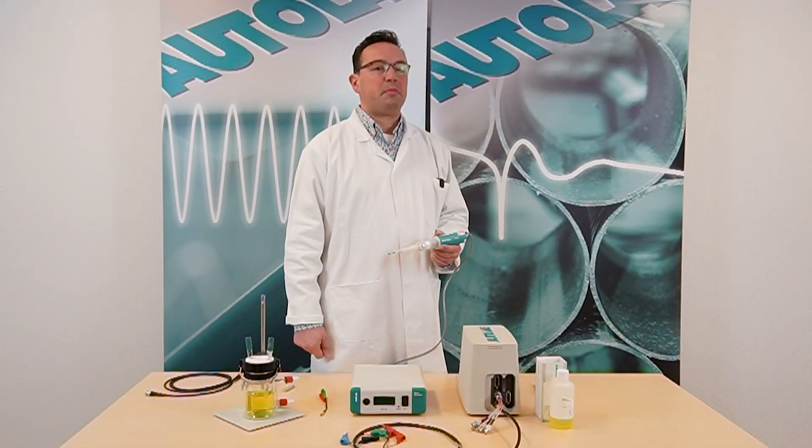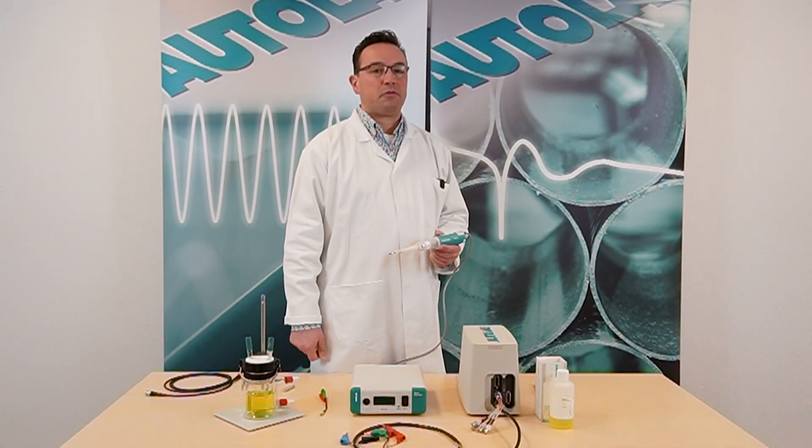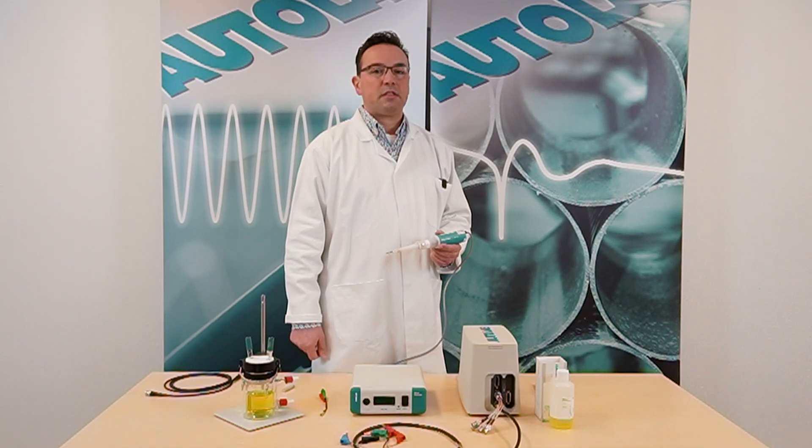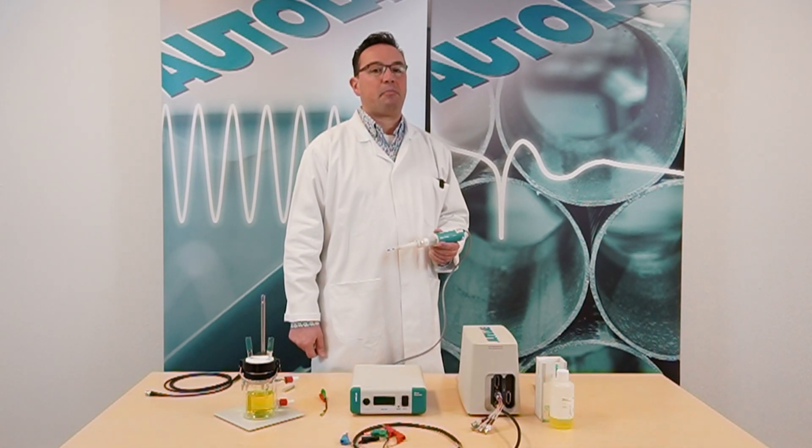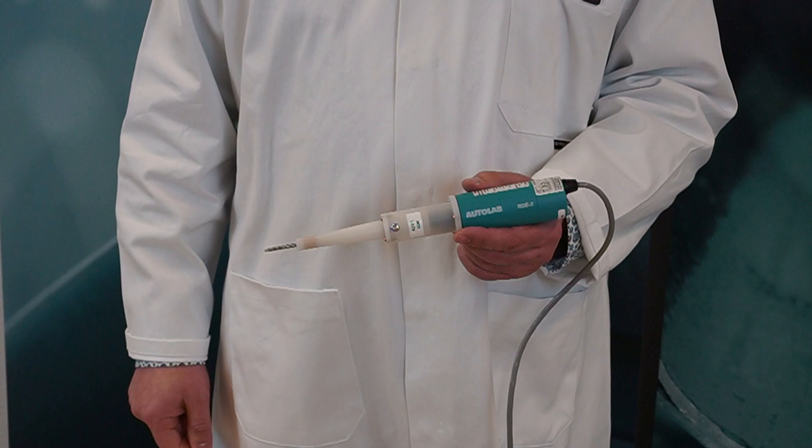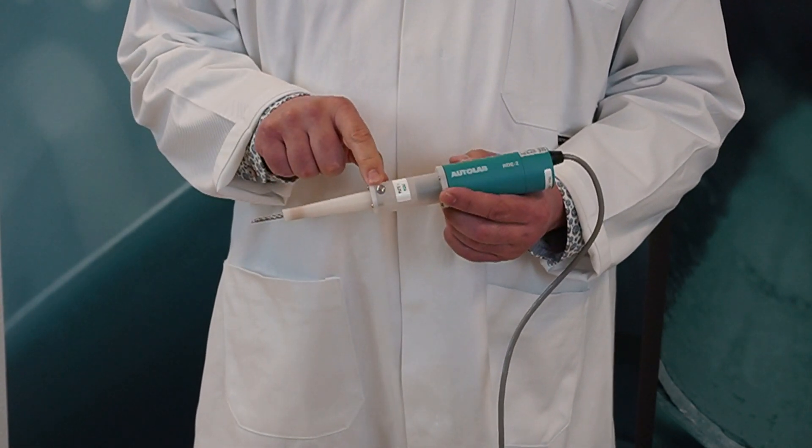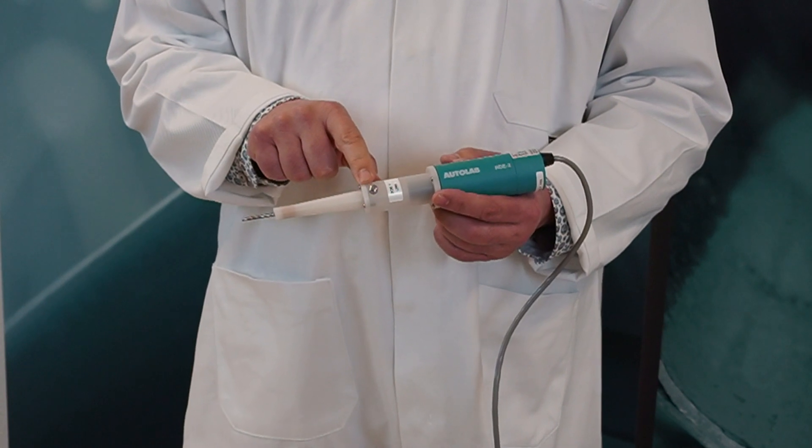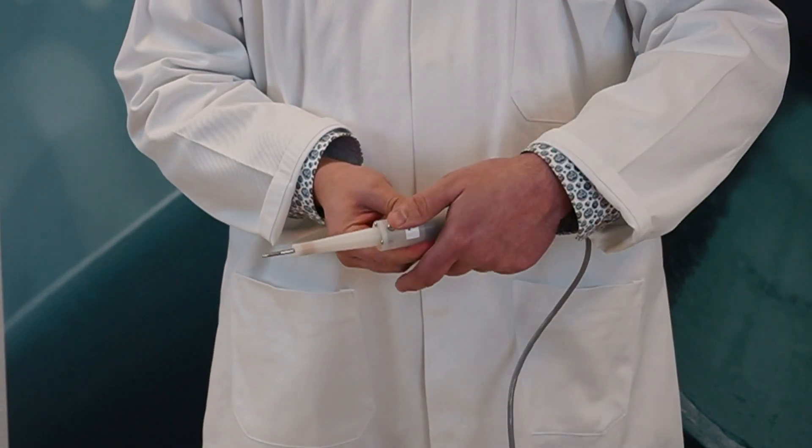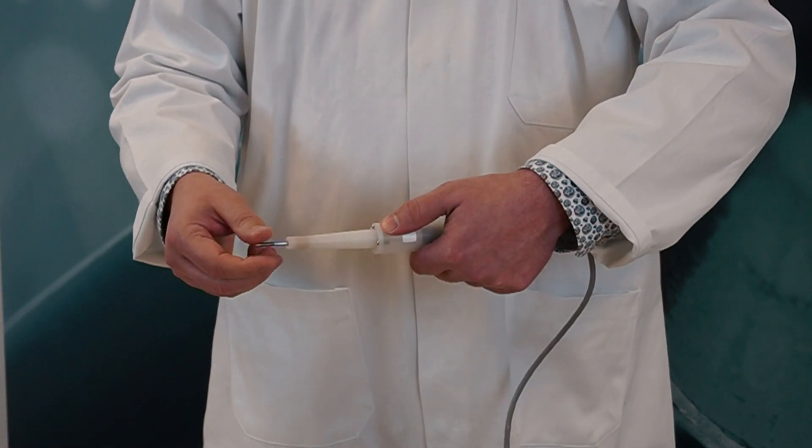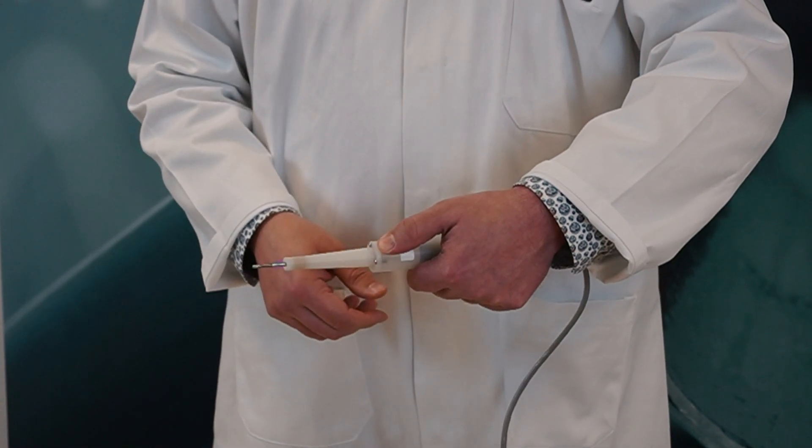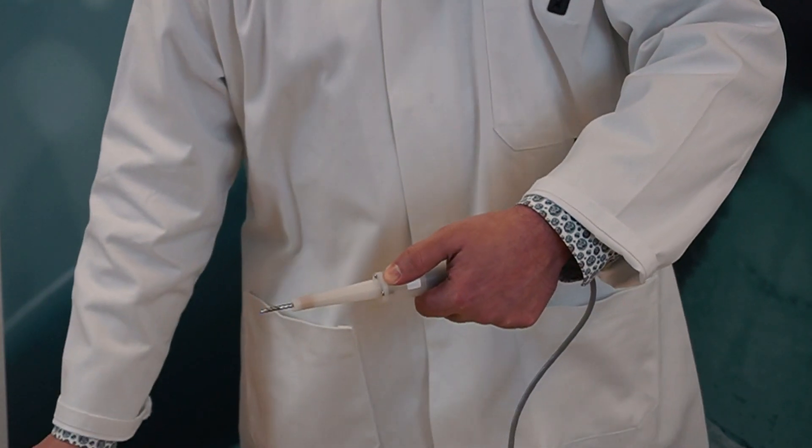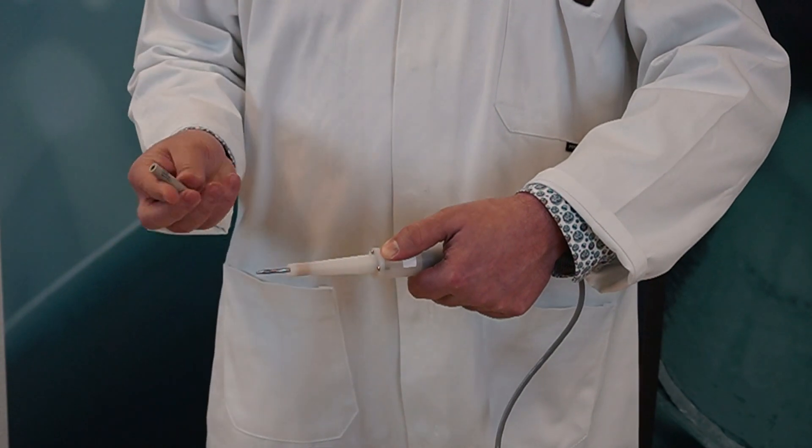We are now going to attach the platinum electrode tip to the axle of the rotator. To do this, keep the axle fixed in place by pressing the axle blocking button on the rotator. This is the axle blocking button. During rotation of the axle, the block button will click in position. So we hold it and we turn the axle until we hear a click. Now the axle is fixed, then gently screw on the electrode tip.